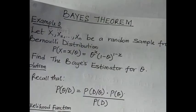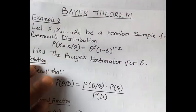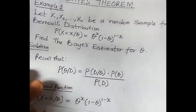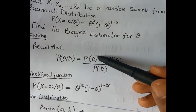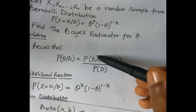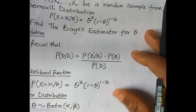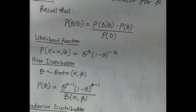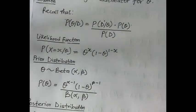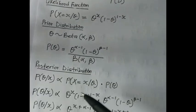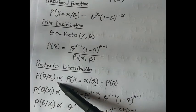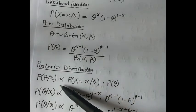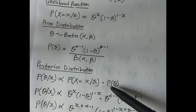To summarize, to solve this type of problem with a Bernoulli distribution, the first thing you do is solve for the likelihood function. When you have the likelihood function, you also get the prior distribution. Then you find the posterior, which is the probability of theta given X.